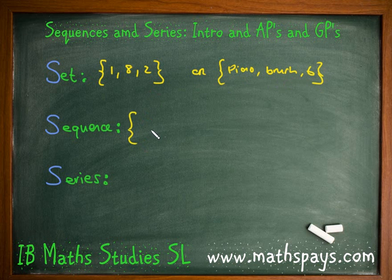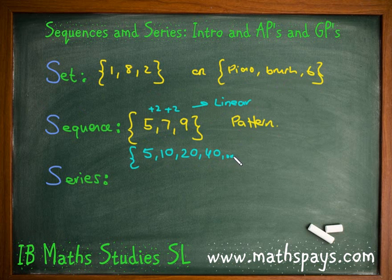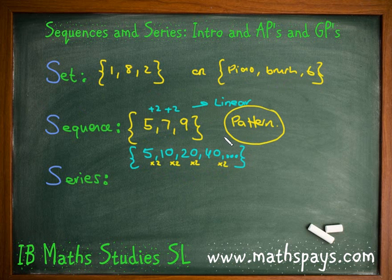So what is a sequence? A sequence is in fact a set, but it's going to be a set that has some type of pattern occurring. I've used a pattern here where we're adding the same number — add 2, add 2 — so the next ones will be 11 and 13. That is what we refer to as a linear pattern. But it doesn't have to be linear. I could use another set like 5, 10, 20, 40 — where we're doubling, or multiplying by 2 each time — so we can get 80 and 160, etc.